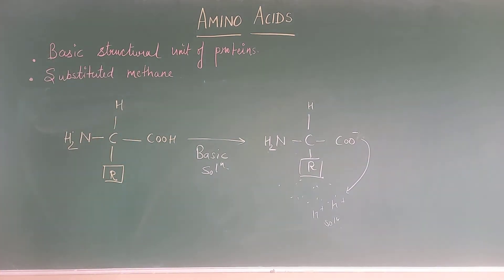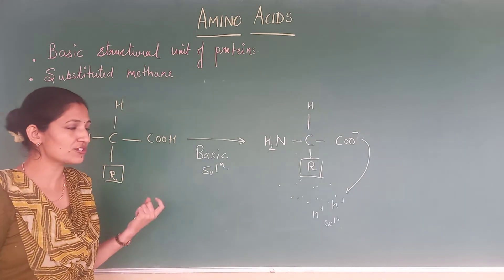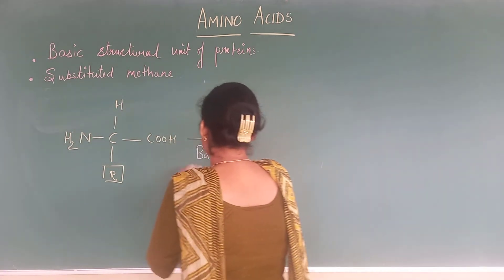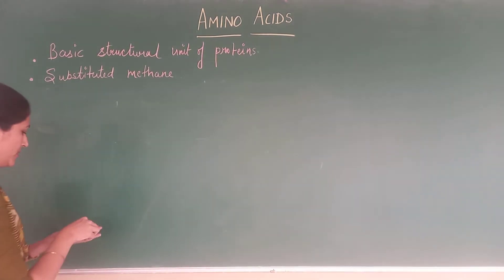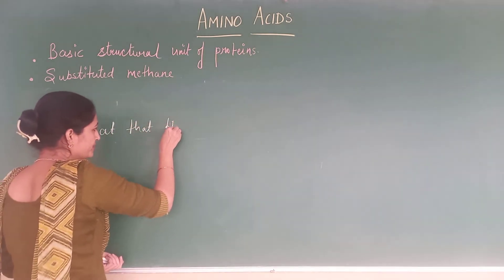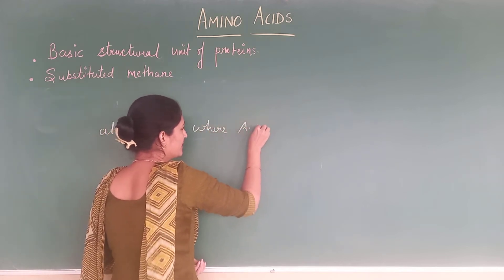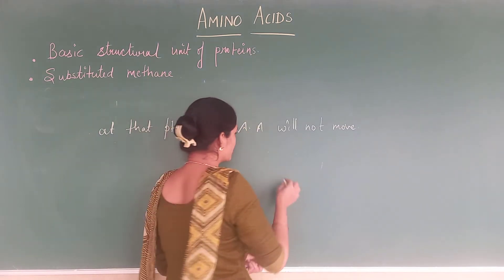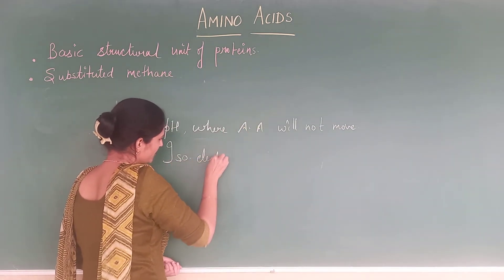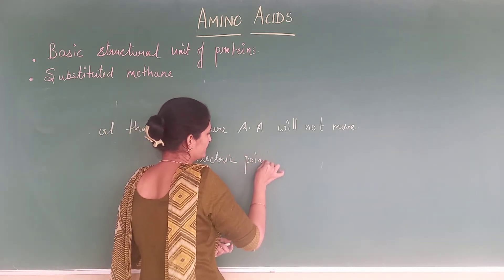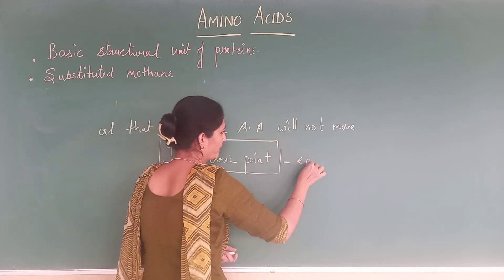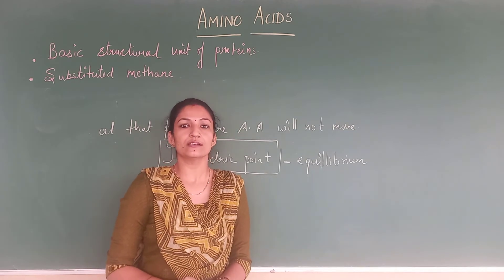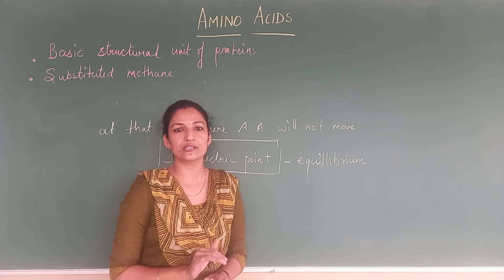Now we are going to check the nature of this particular amino acid in aqueous solution — at the pH where it will not move into the solution at all. That particular pH is the isoelectric pH, or we can say the isoelectric point. At that equilibrium, the amino acid forms a dipolar or neutral ion which we are going to call the zwitter ion. So here we are going to discuss how the zwitter ion is formed.